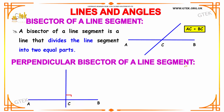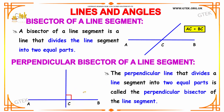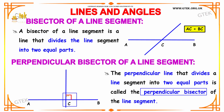Next we are going to study about the perpendicular bisector of a line segment. If the bisector divides the line into two equal parts, it is said to be a perpendicular bisector of the line segment. In a perpendicular bisector, the angle that the bisector makes with the line segment will be a right angle. So the perpendicular bisector divides the line segment into two equal parts at a right angle.